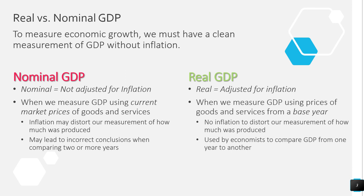So instead, we want to use real GDP, which is GDP that's adjusted for inflation. If we measure GDP using the prices of goods and services from a base year, then there's no inflation to distort our measurement of how much was produced. This is the way that economists actually compare GDP from one year to another. So from here on out, just get used to talking about real GDP, because as economists, real GDP is far more interesting and useful for us.